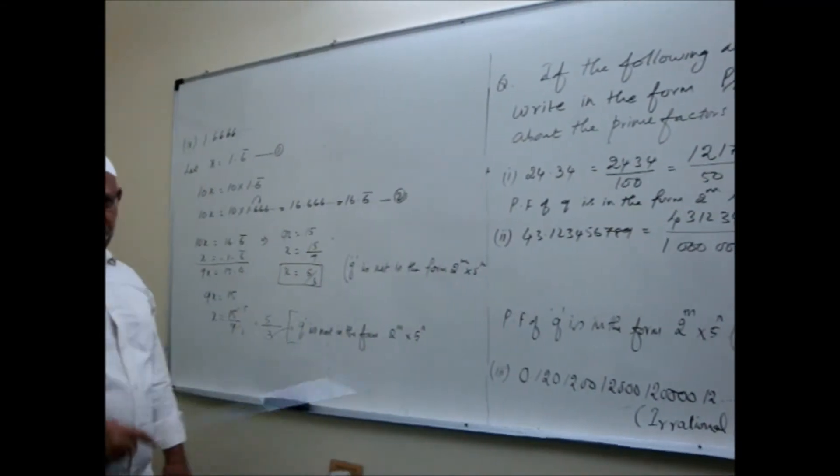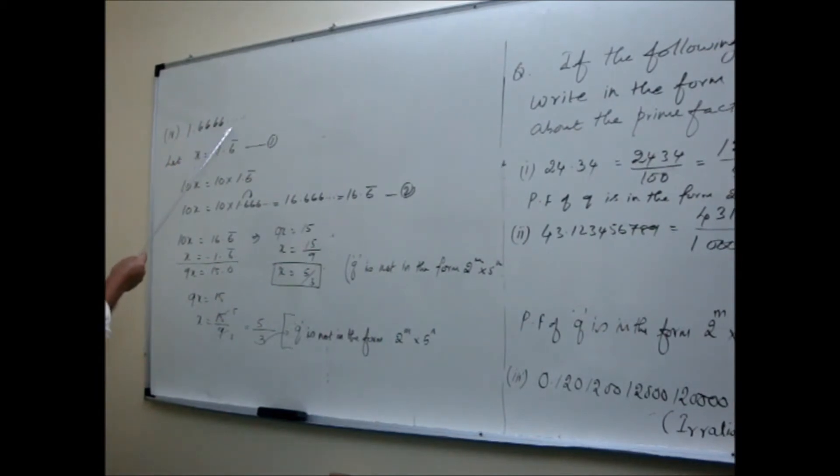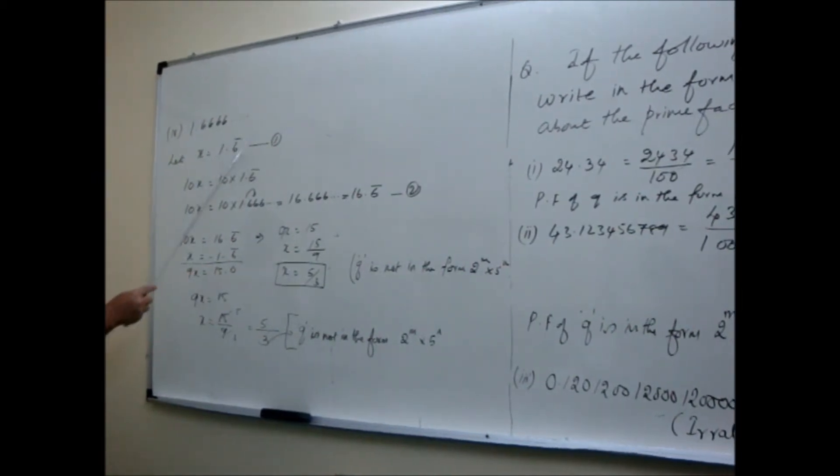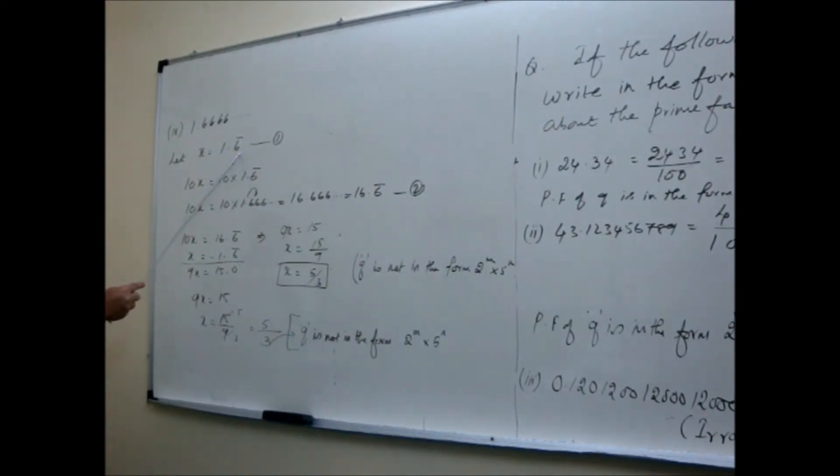Go to some more examples. It is a ninth class question. They have given 1.66665, means 1.6 bar. You might be remembering that how we did it in class 9. So you will write the given number as X. X is equal to 1.6 bar. And you will multiply both the sides by 10. Because one digit is repeating, multiply by 10. So it will become 10X. 10X is equal to 10 times this number. So 10 times 1.6 bar. When I multiply by 10, the point is coming this side. So I get 16.666, means 16.6 bar. This is 1X, this is 10X.